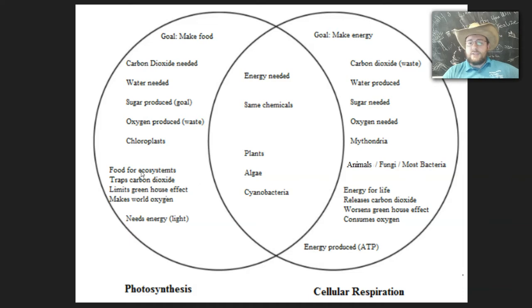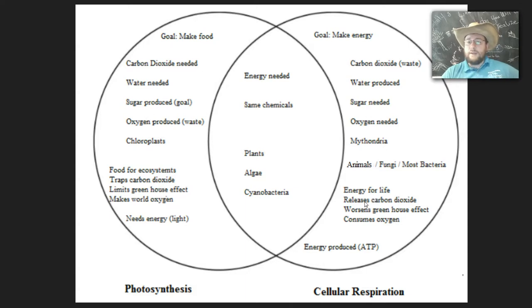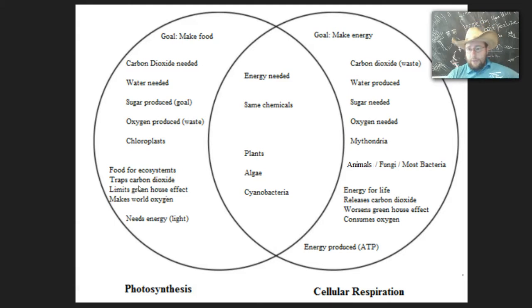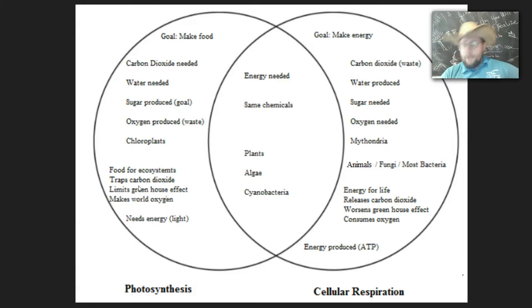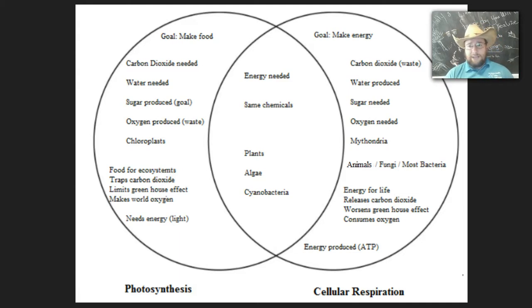Photosynthesis makes food for all the ecosystems of the Earth and traps carbon dioxide from the atmosphere, while cellular respiration makes energy for life and releases carbon dioxide back into the atmosphere. In a way, photosynthesis limits the greenhouse effect by trapping carbon dioxide from the atmosphere. For thousands and millions of years, photosynthesis has done that — getting carbon dioxide produced by volcanoes, by wildfires, and by life, and transferring it back into life in the form of sugar.